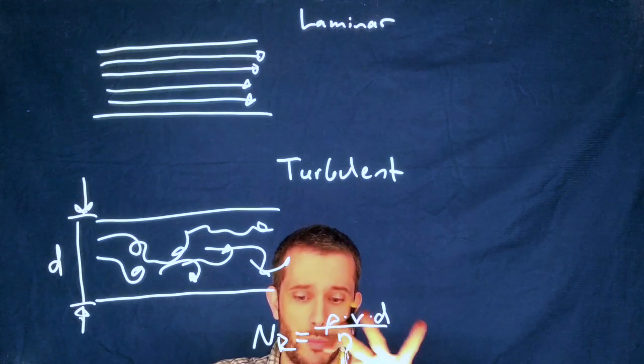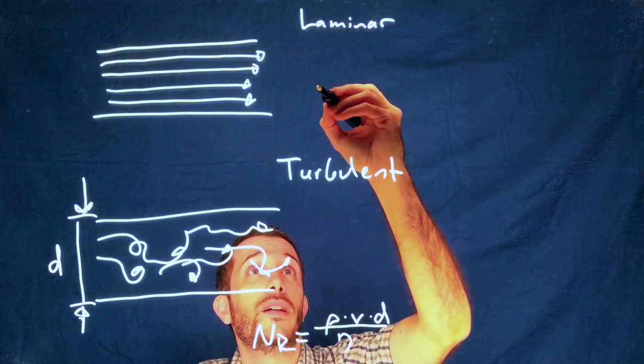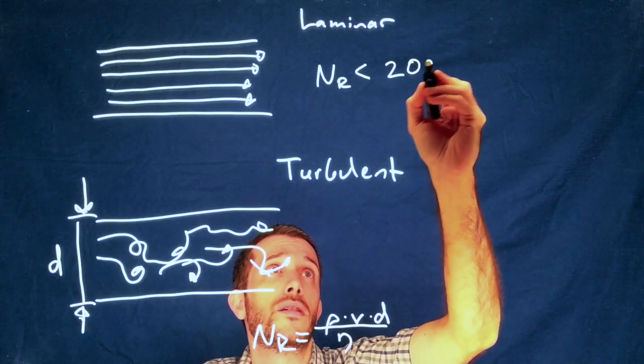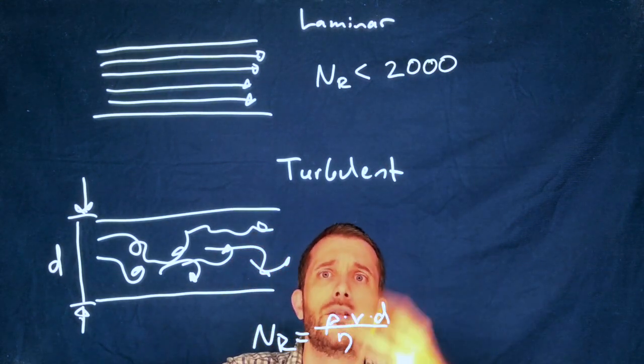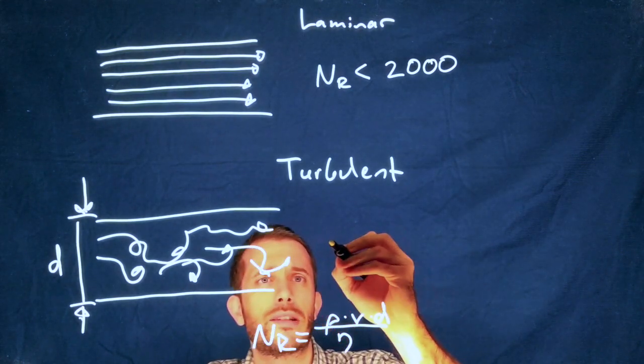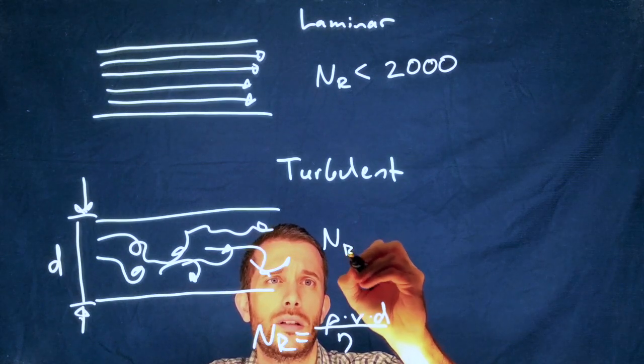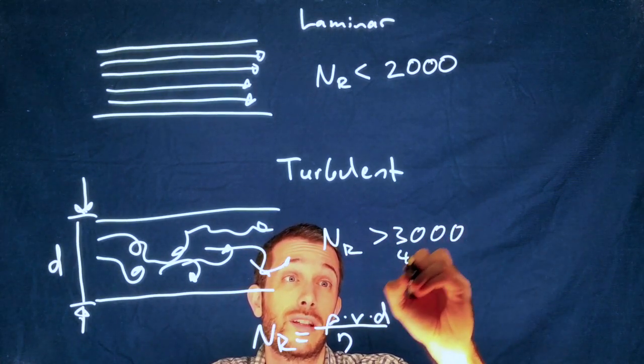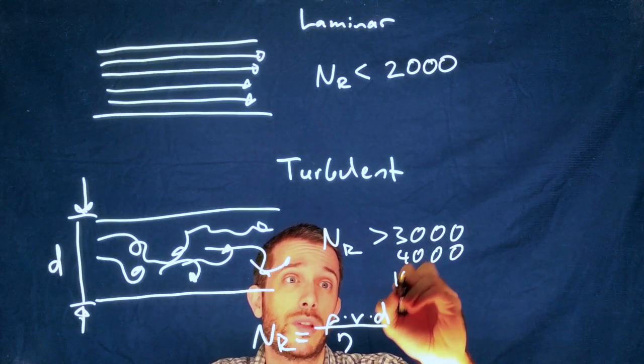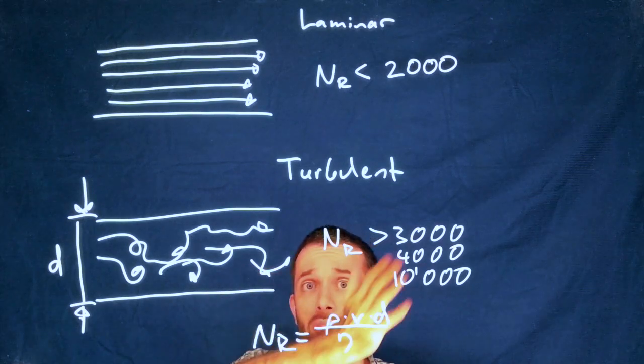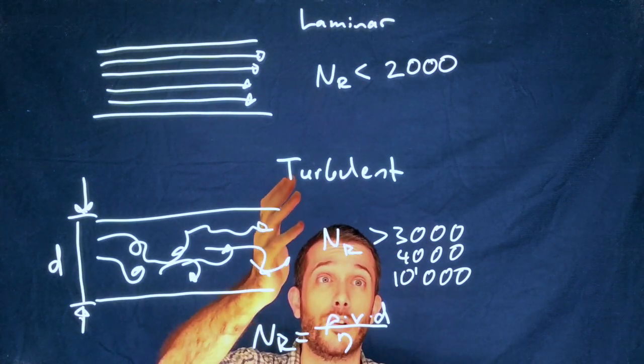Now, if your Reynolds number ends up being smaller than 2,000, most likely you're going to have a laminar flow. If however, your Reynolds number is much bigger, say 3,000, some sources say 4,000, I've even seen some saying 10,000, so the larger your Reynolds number, the more chance you have to have turbulent flow.